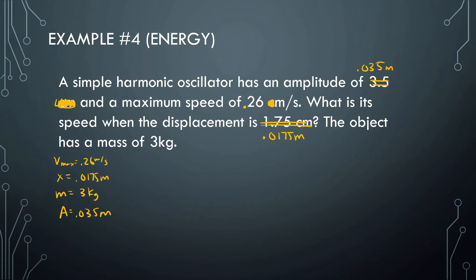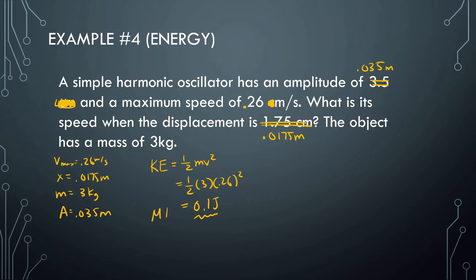I have the maximum velocity and the mass, so I can find the total energy by finding the kinetic energy at the maximum velocity. That's one-half mv squared: one-half times 3 times 0.26 squared. I get around 0.1 joules. Even though this is just kinetic energy, this is the kinetic energy at the equilibrium point, so this also gives me the total mechanical energy.